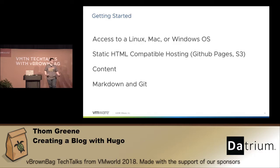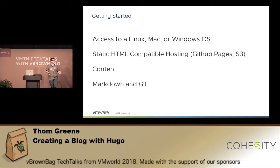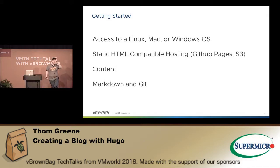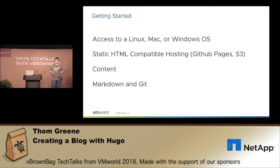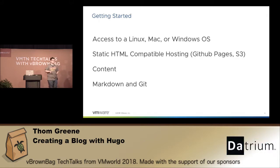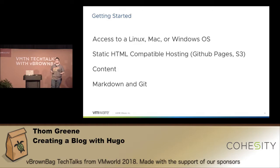So what do you actually need to get started with Hugo? You need access to an operating system. If you're using a Chromebook, you may not have the ability to install Git or the Hugo executables, so you can use a cloud instance — the nano instance in AWS — or you can use your local OS on a laptop. You also need compatible hosting. I personally use AWS S3, but you can use GitHub Pages if you don't want to pay anything. I pay 56 cents per month for all my hosting, but if you just want to get started and learn, you can use GitHub Pages for free.